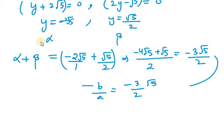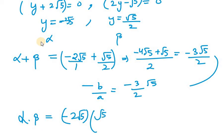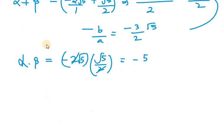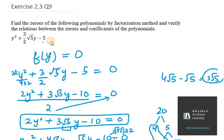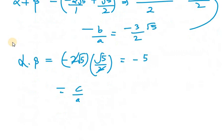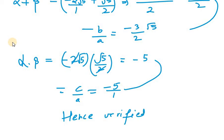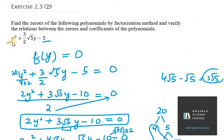Next, α·β = (-2√5) × (√5/2). The 2s cancel, leaving -5. From the formula, c/a = -5/1 = -5, which matches. Therefore the question is fully verified. That's the answer for question number 9. Thank you for watching.